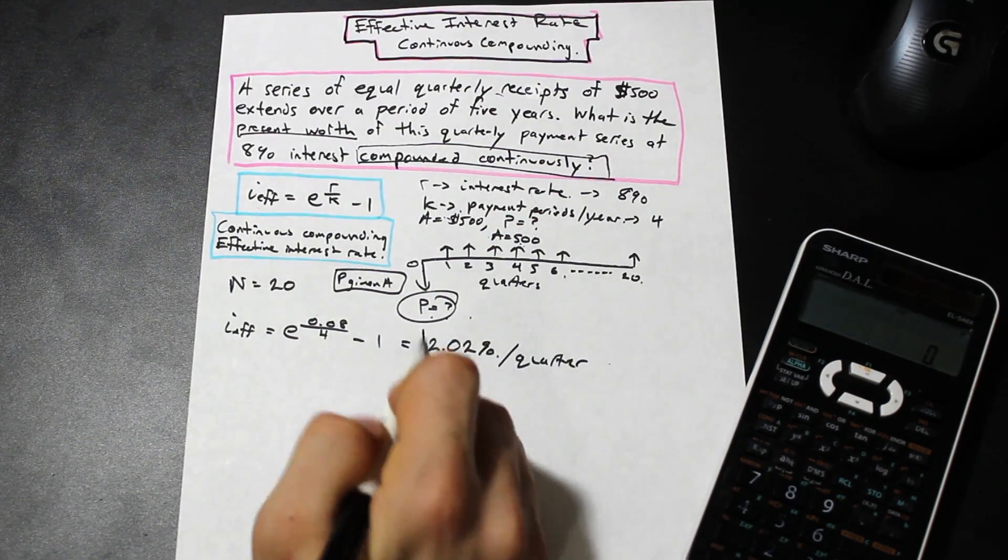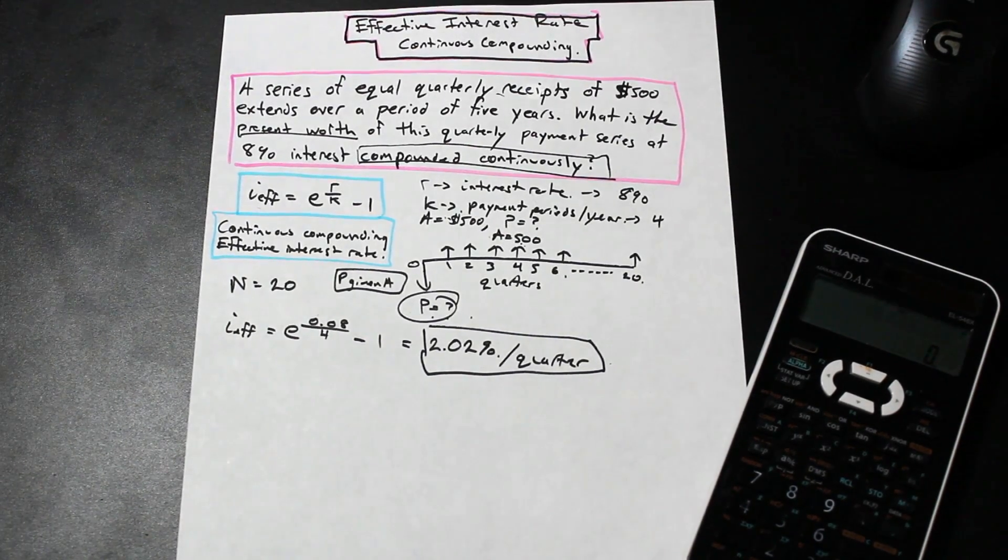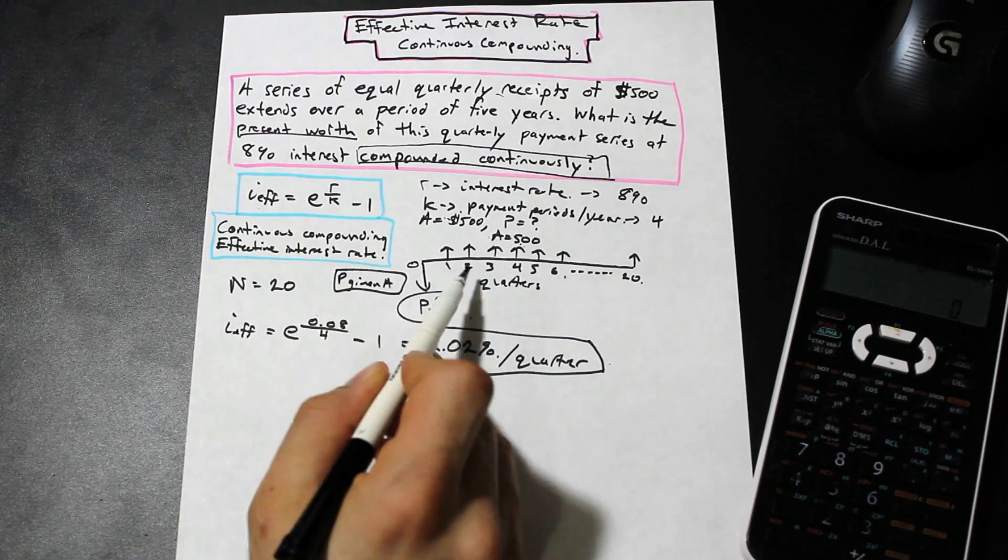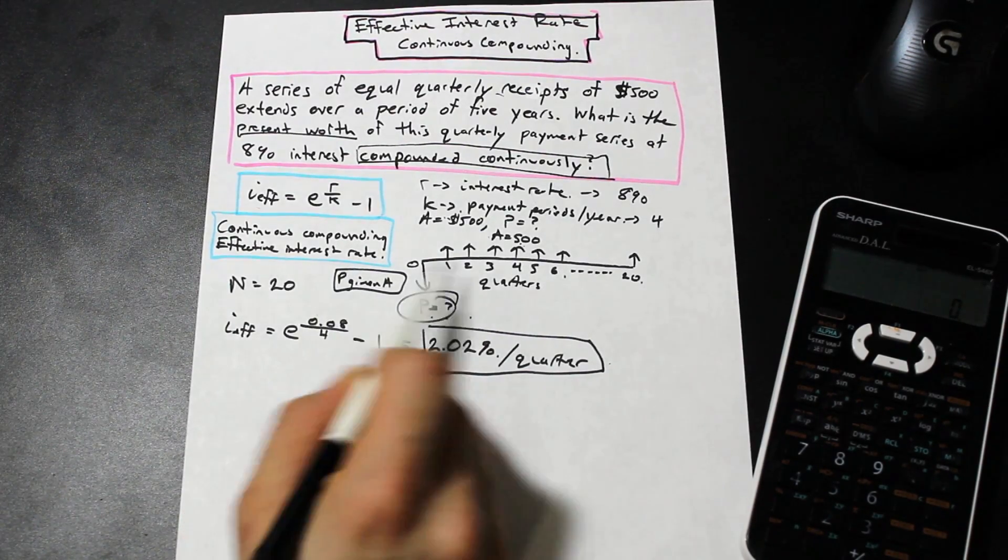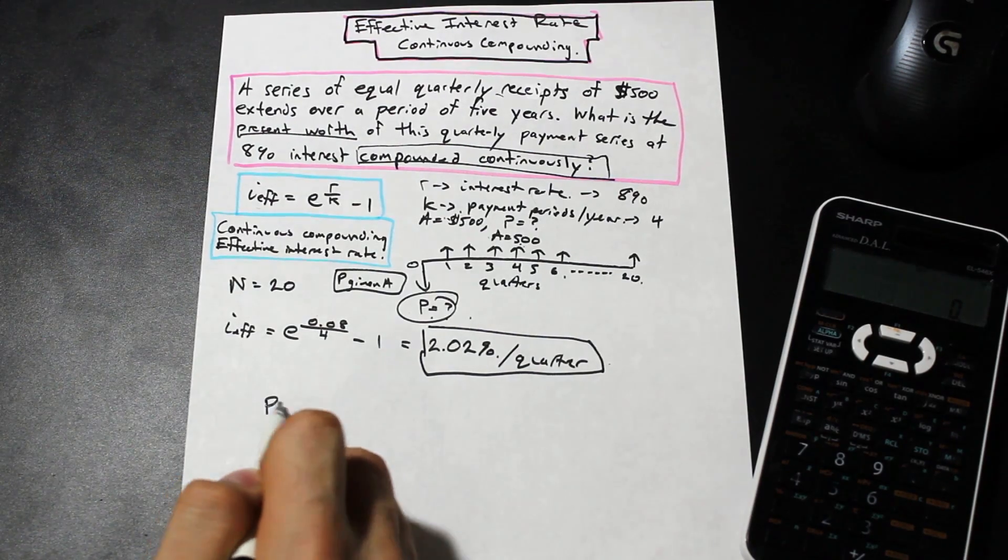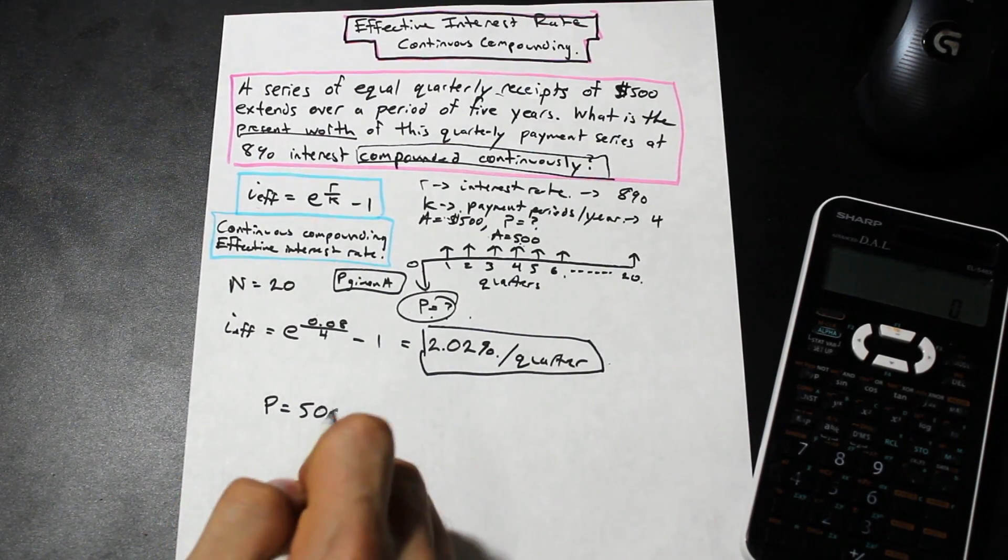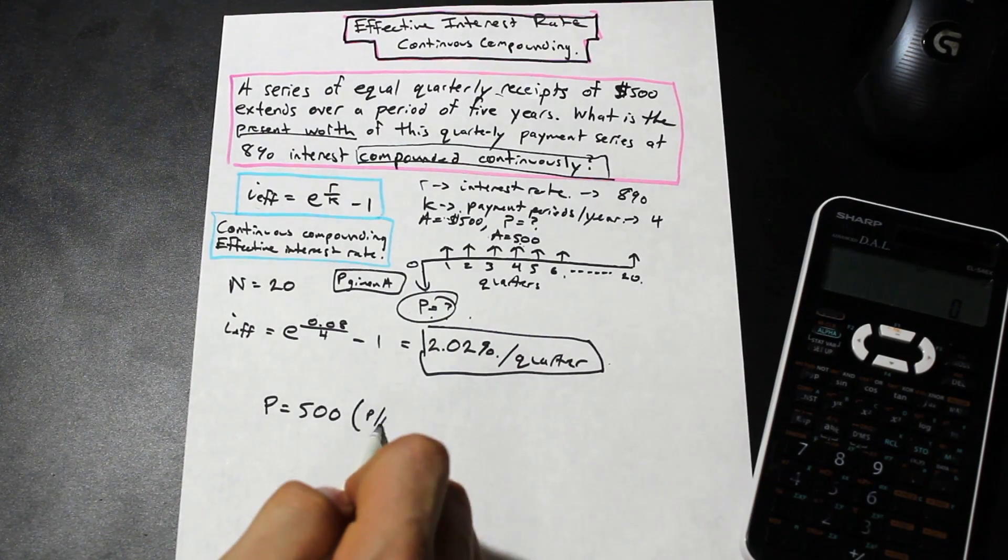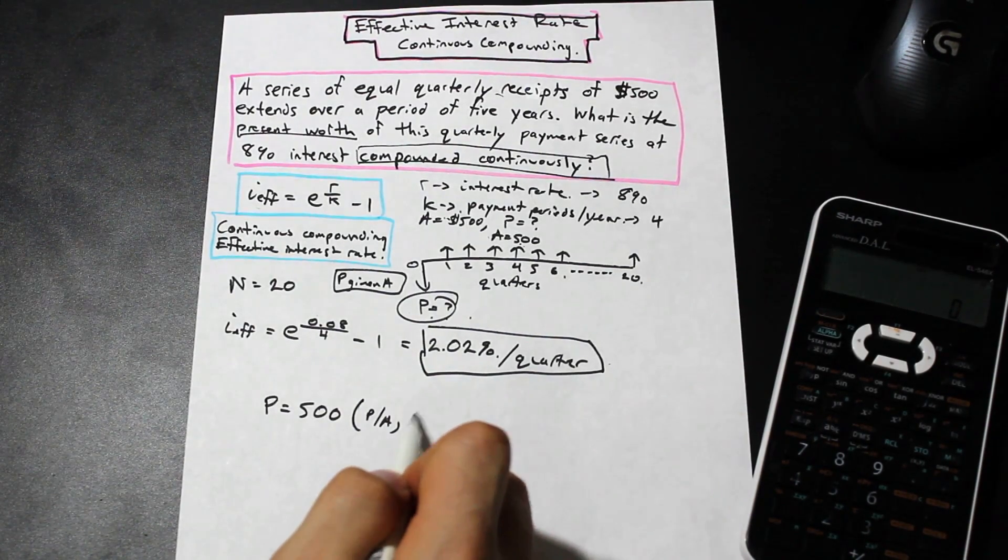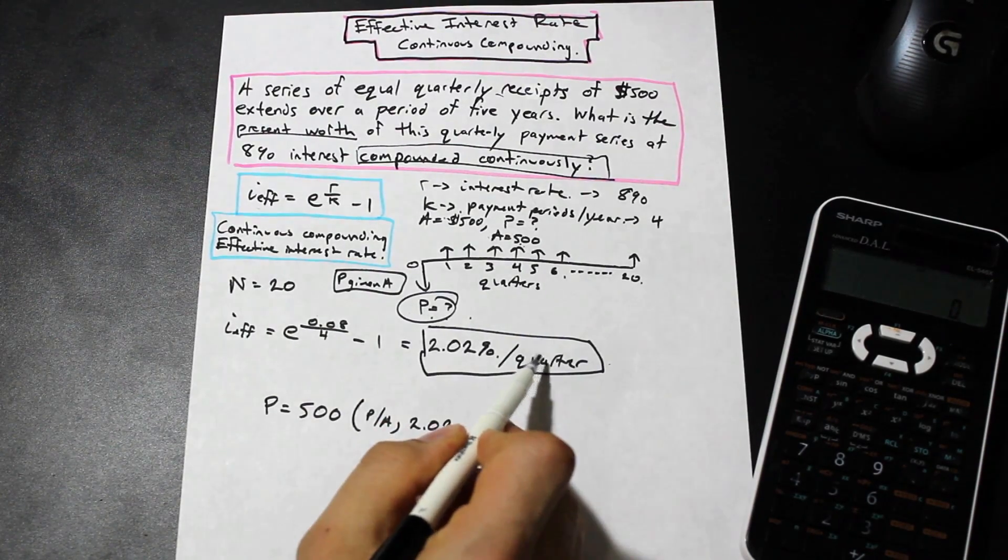So the interest rate that you find always corresponds to the payment period. Now we have the interest rate. We established before that we want to find the present value of this annuity and we're given the annuity. So what we want to do is find the present given the annuity. So we have $500 P given A times the interest factor. We have P given A, and what's our interest rate? 2.02. And how many quarters do we have? 20.